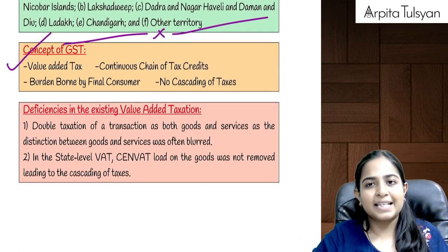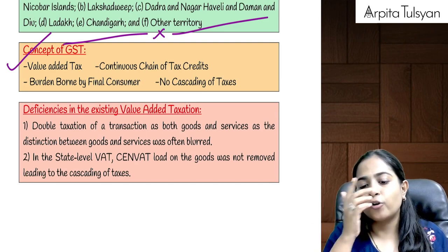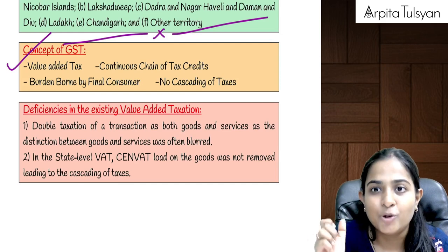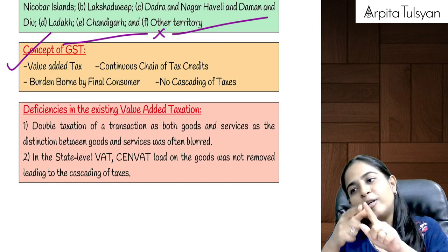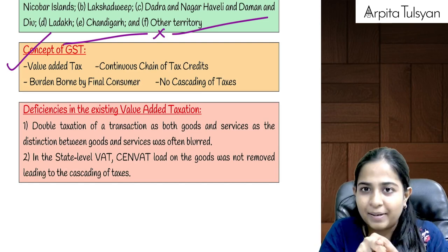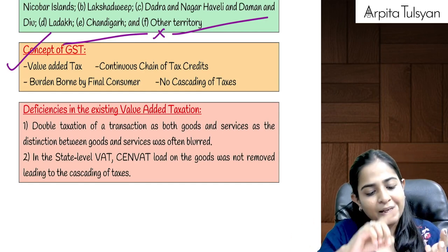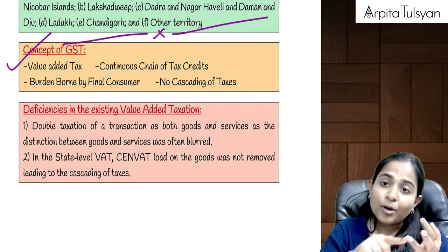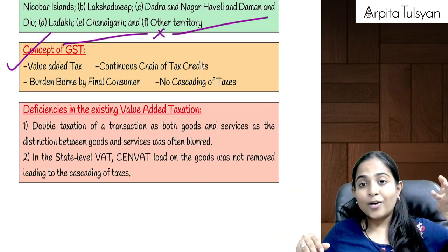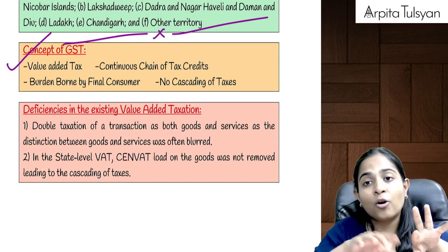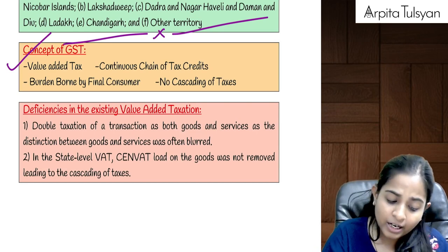Moving on to the concept of GST — what is so special about GST? First of all, GST is the actual value-added tax, meaning only on the value addition that is done, only on that amount, GST is applicable. Secondly, GST is the whole and sole tax applicable on manufacturing, on reselling, and on consumption. In the old law, on manufacturing we had excise duty, on sale we had VAT, etc. But here, you have got a single tax that is your GST.